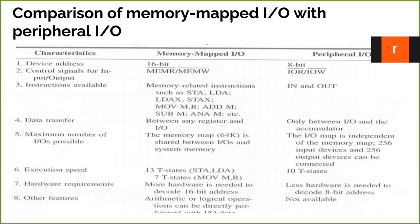Let us compare between memory map I/O and peripheral I/O. First, the characteristics: the device address for memory map I/O is 16-bit, whereas for peripheral I/O it exclusively uses only the higher-order bits (A-H). We are going to use IN and OUT instructions for peripheral I/O. The control signals for memory map I/O are MEMR and MEMW — the same signals used to address memory.